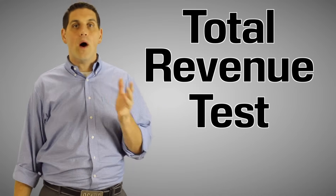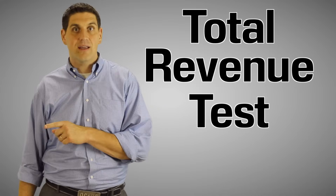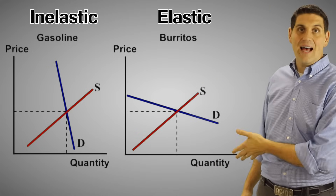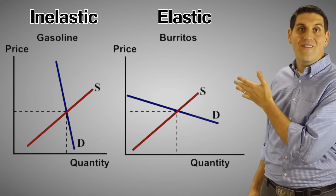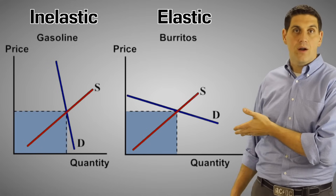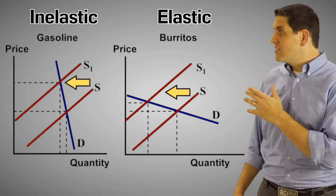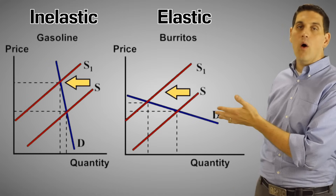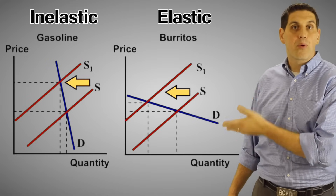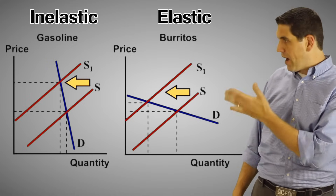One of the most important topics you're going to see is something called the total revenue test. This tells you what happens to total revenue when there's a change in price, if the demand curve is inelastic or elastic. Over here on the left, we have inelastic demand. Right here on the right, we have elastic demand. The total revenue is the price times the quantity — it's this box right here. Notice how the box on both graphs starts exactly the same size. When supply shifts to the left, that causes the price to go up. Notice that on both curves, the price goes up and the quantity goes down.